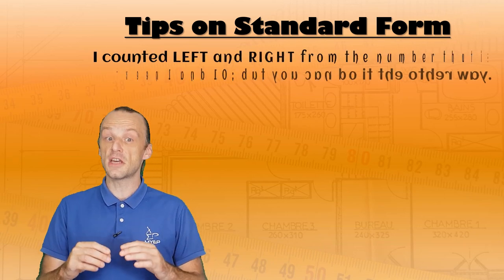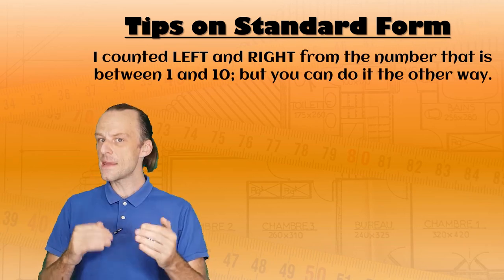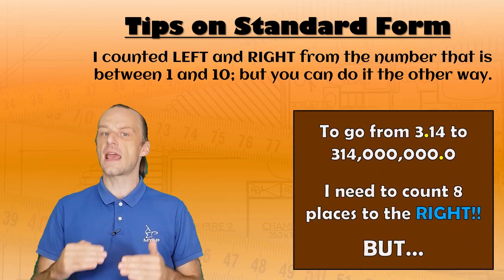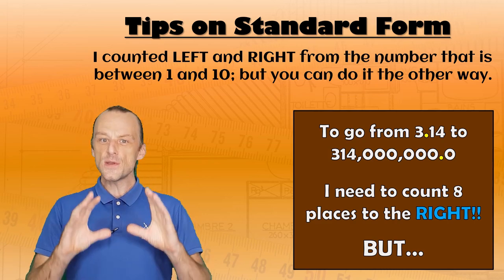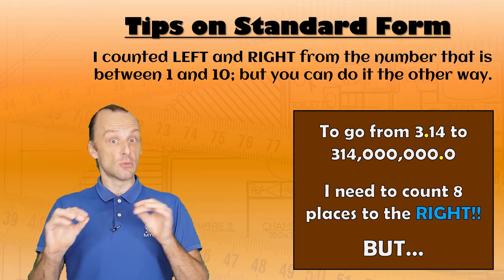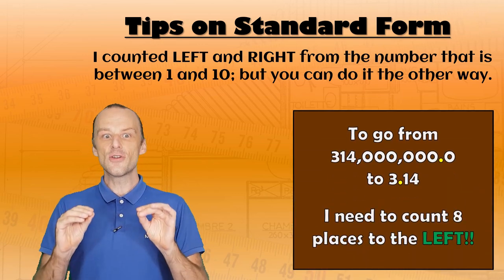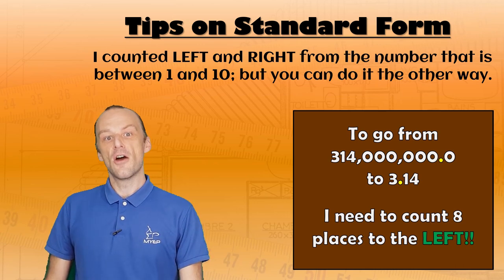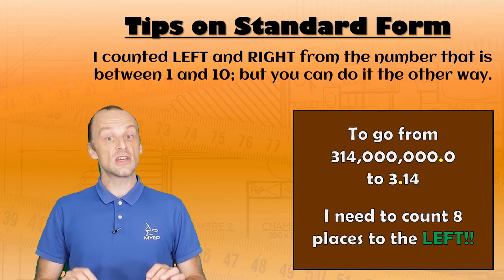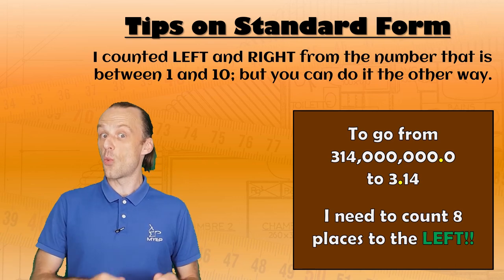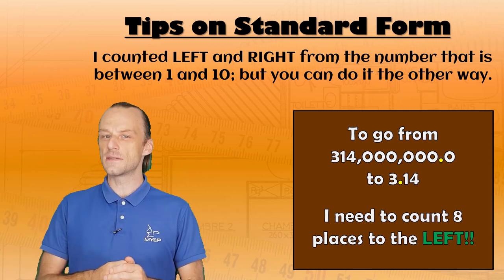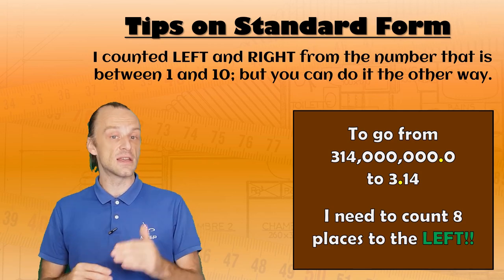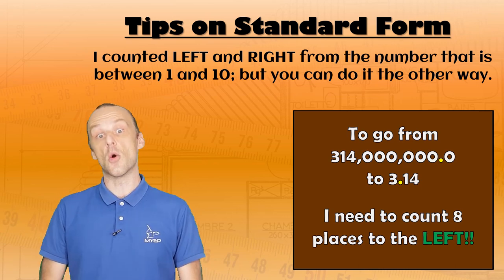Second, notice that I took the first step of placing the decimal point after the first non-zero digit to make my standard number, and then I counted right to make it bigger and left to make it smaller. But if you start with a number and you want to move the decimal point to make your standard number, then you're going to reverse those directions. For example, if you want to turn 314 million into 3.14, you need to jump the decimal point 8 places to the left, not the right. Just make sure you know where you are starting from and whether you want to make your number bigger or smaller.